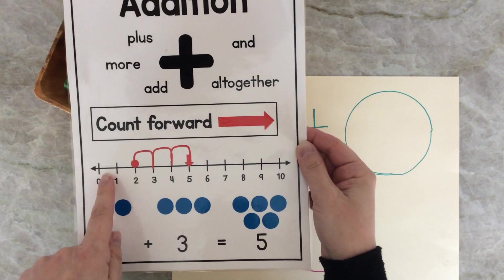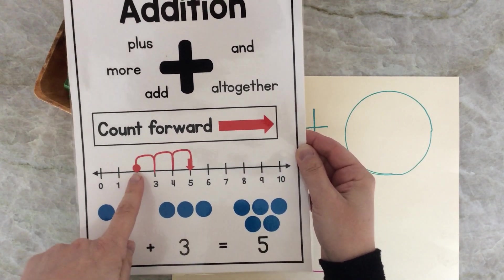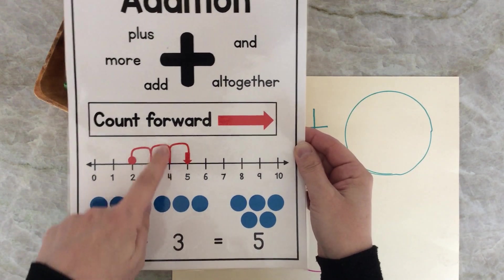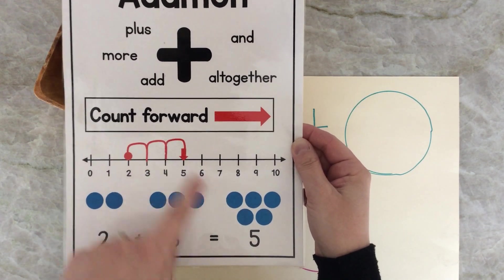So take a look at my number line. Two, and I'm going to put three more, the number's going to get bigger. It's going to get to five.